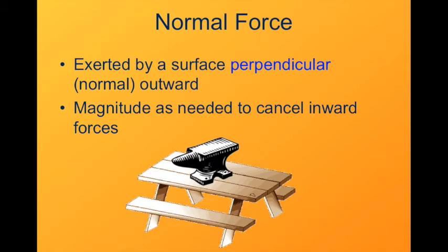And generally, in most of our cases, this normal force is going to be a force of constraint. Its magnitude is whatever it needs to be to cancel the forces that are acting inward on the object. So in this particular case, we've got the weight of the anvil, which is the force of gravity on it.